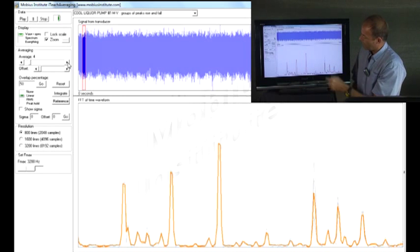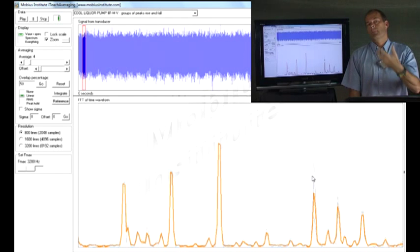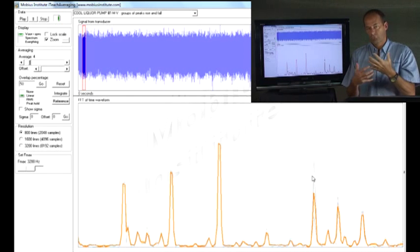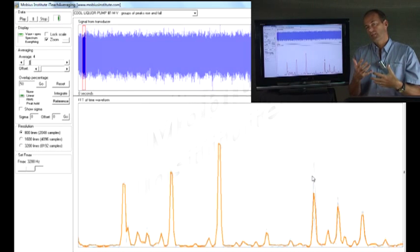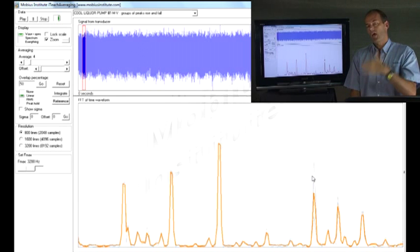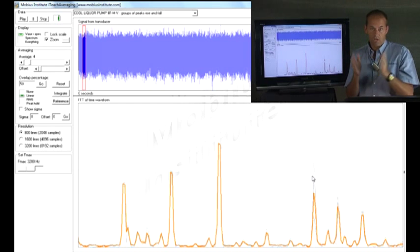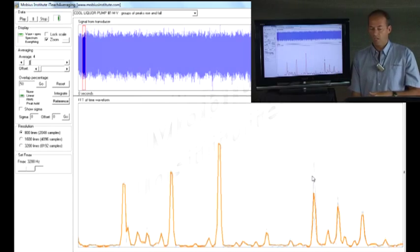The orange line is the final spectrum. But if you look in the background there, you can see the grey vibration represents the other spectra that we measured from the machine and that comprise the average. So, ideally, if we had chosen four averages from this machine and we continued to go to the fifth average and the sixth average and the seventh average, well, the orange line wouldn't change much.